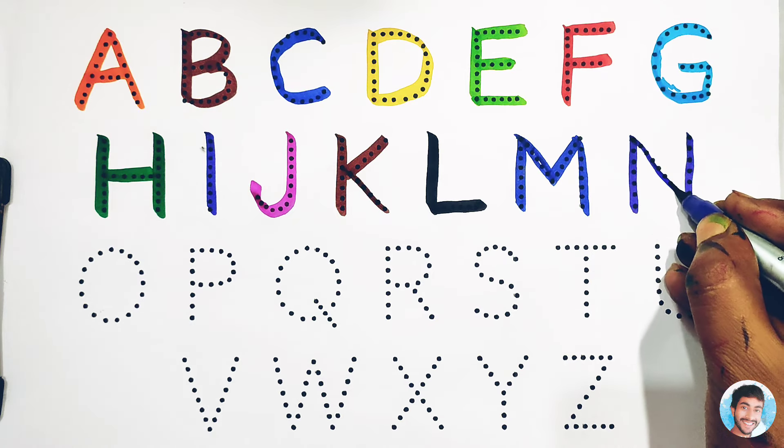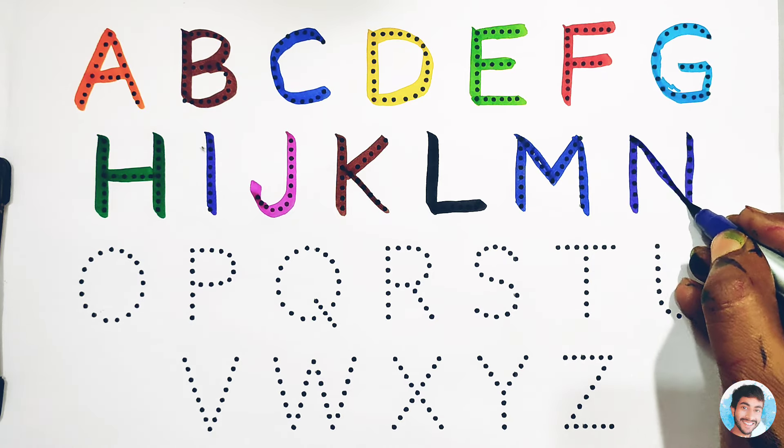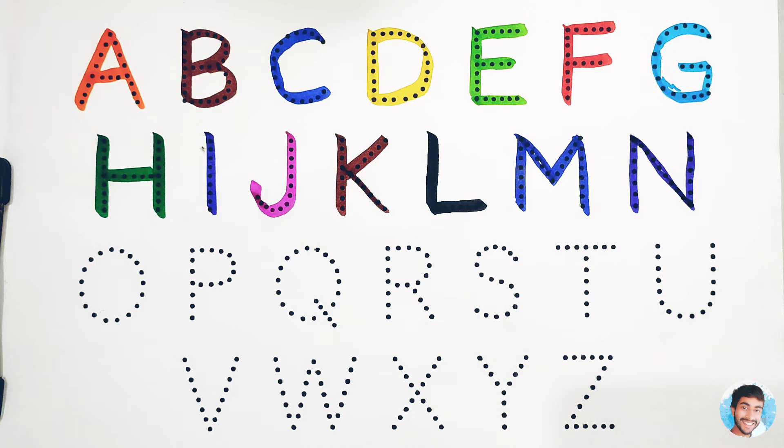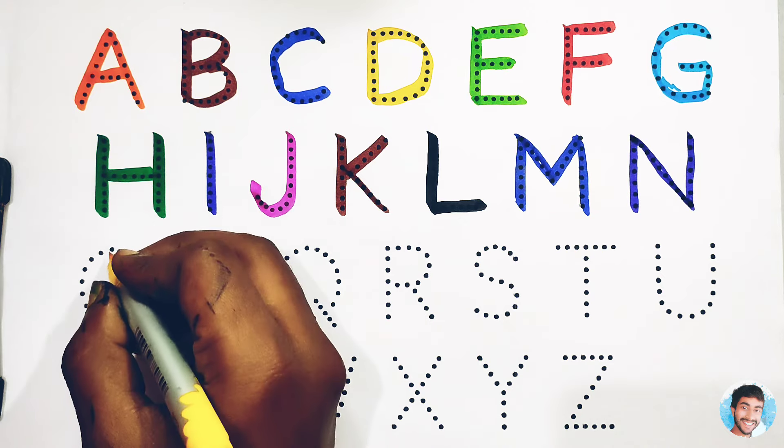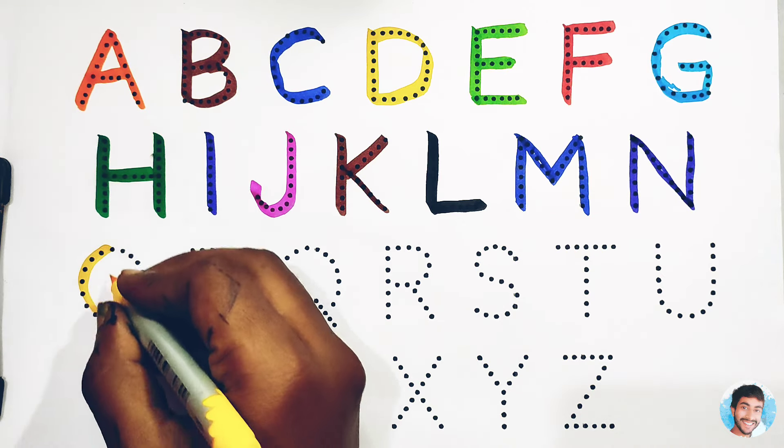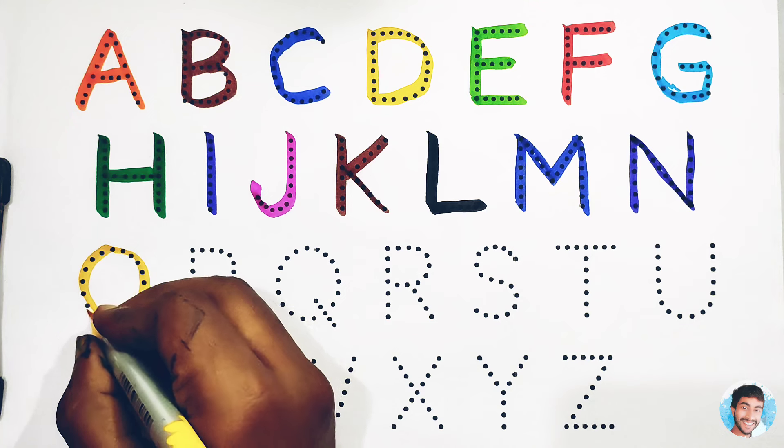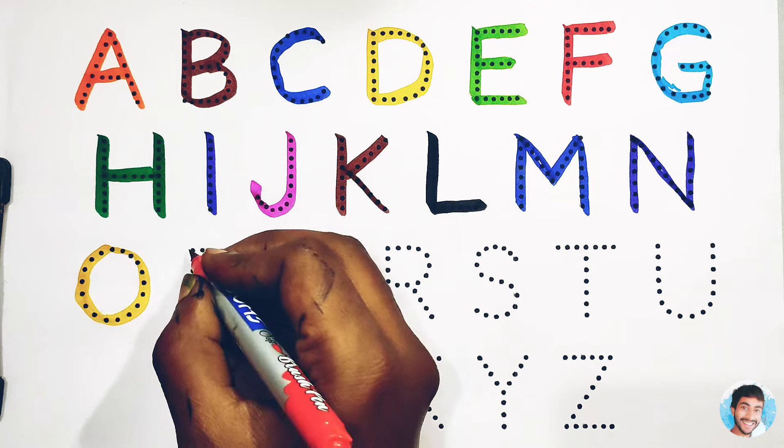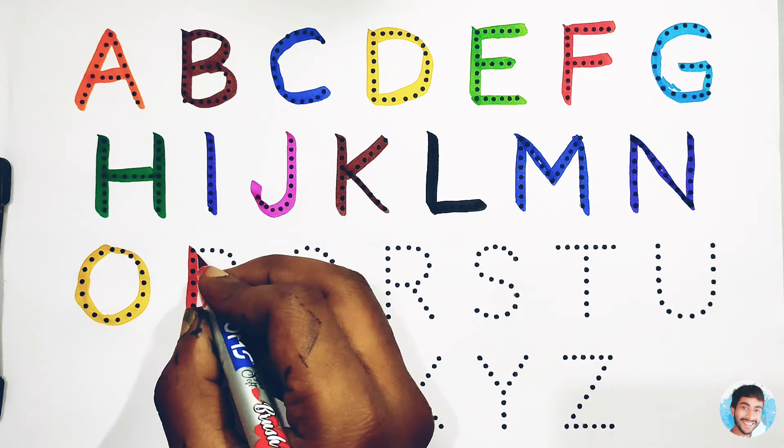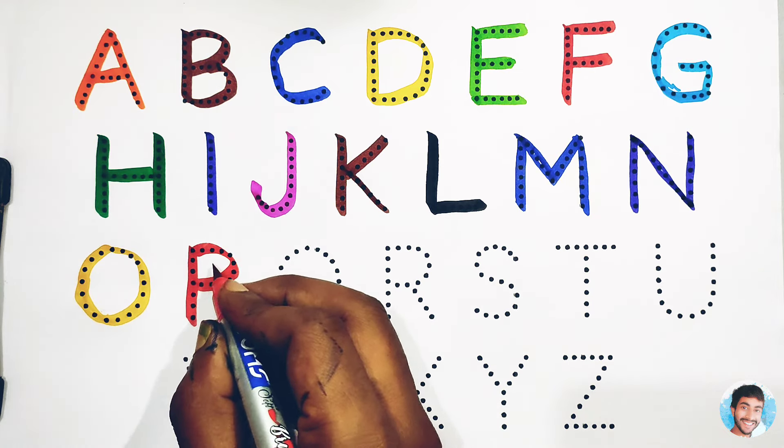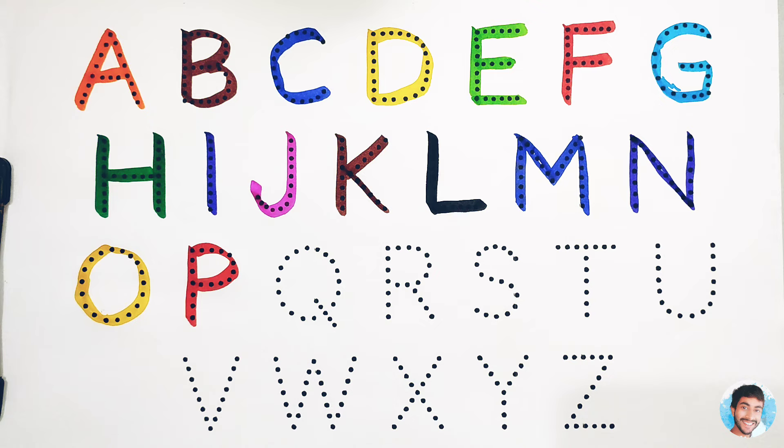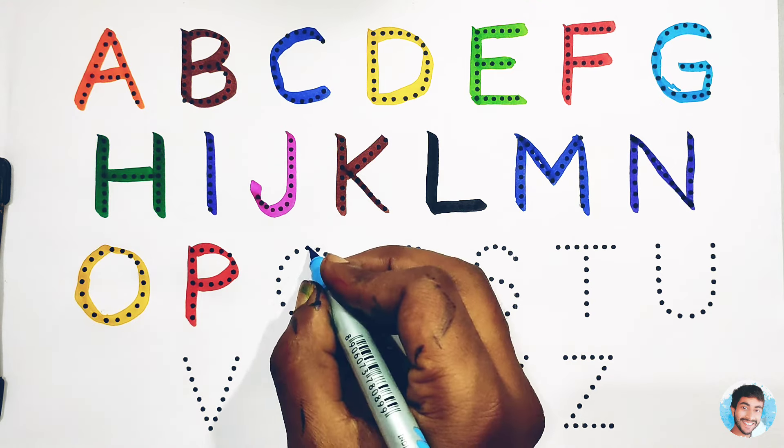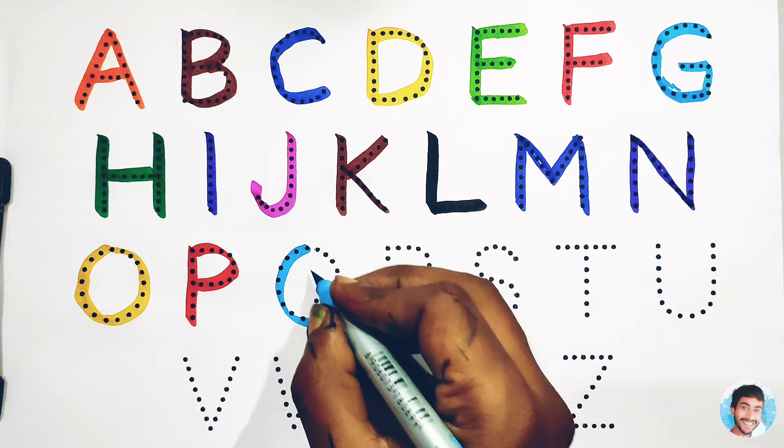N for Nose, Nose means Naak. Yellow colour O, O for Ox, Ox means Bell. Red colour P, P for Parrot, Parrot means Totah. Sky blue colour.